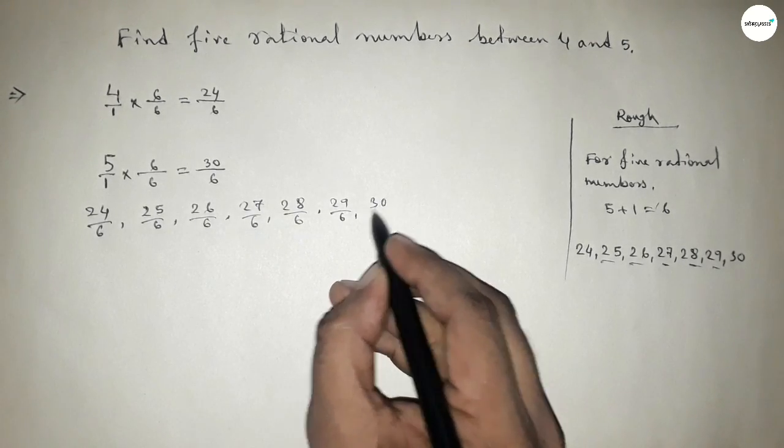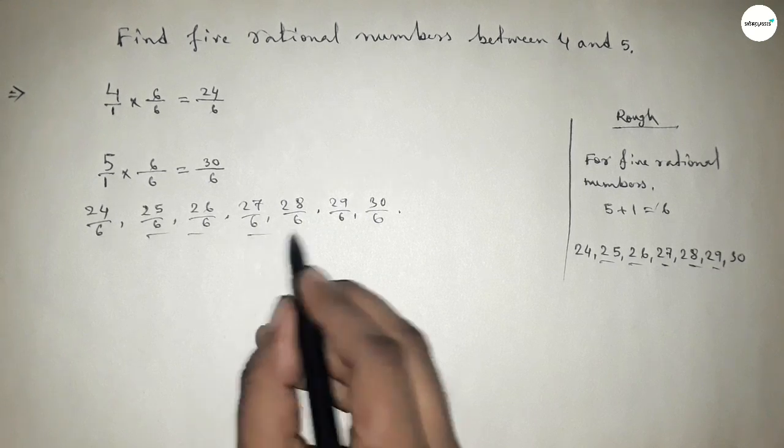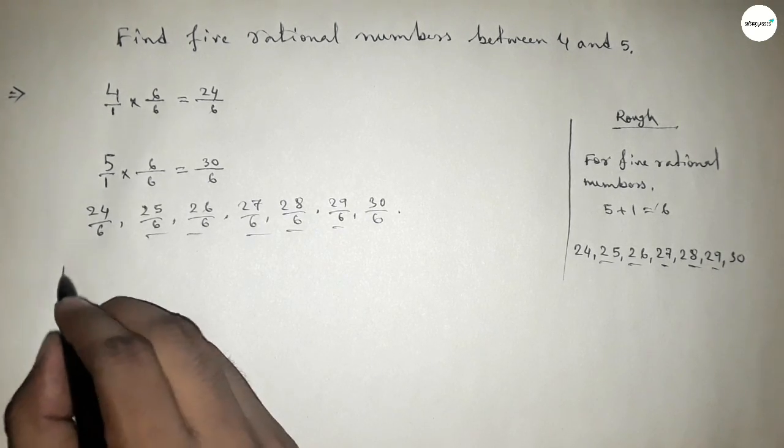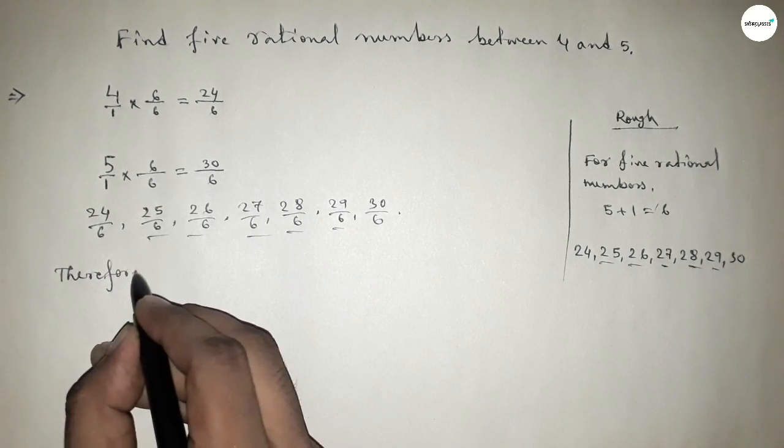These are the rational numbers between four and five.